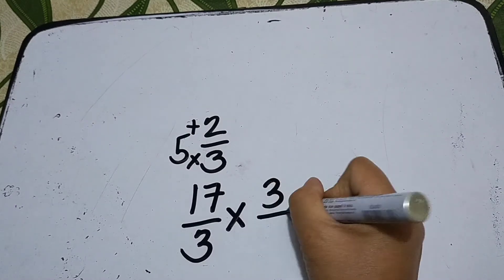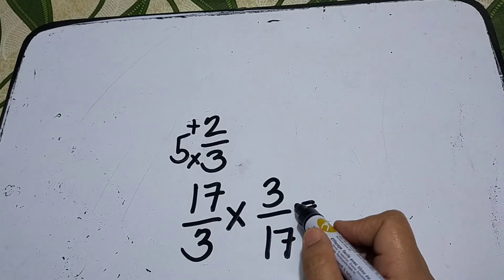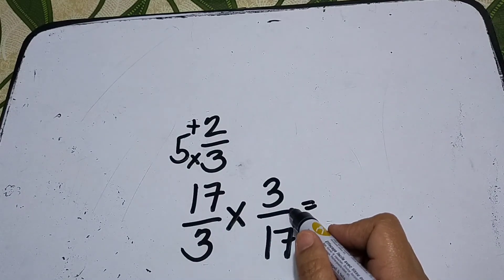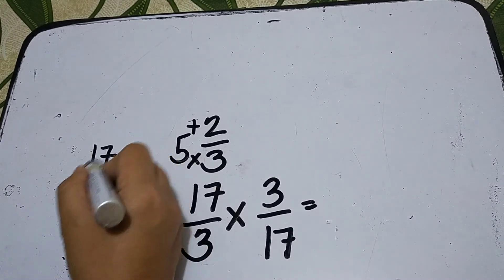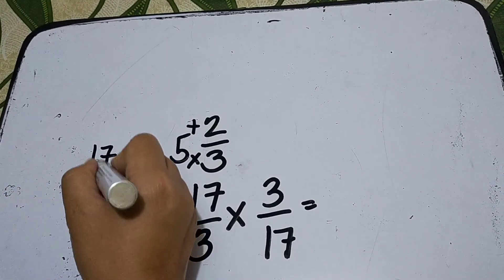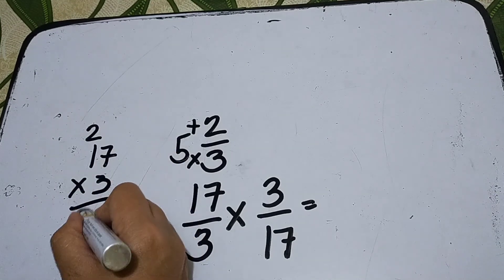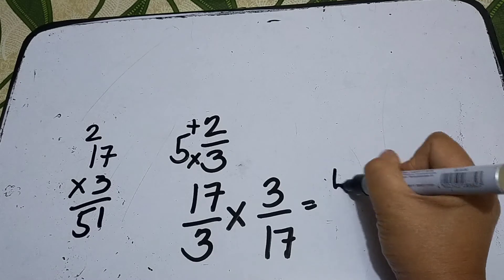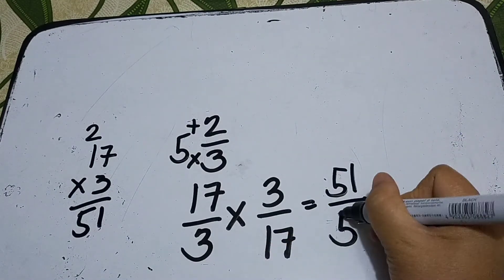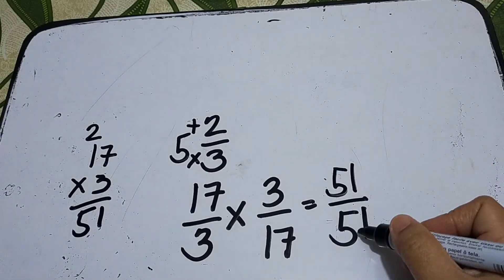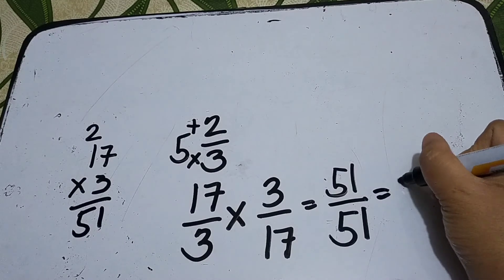The reciprocal of 17 over 3 is 3 over 17. So 17 times 3 — if you can't do it mentally, you can use scratch work: 3 times 7 is 21, carry 2; 3 times 1 is 3, plus 2 is 5 — so 51. And 3 times 17 is also 51. So 51 over 51, or 51 divided by 51, is equal to 1.